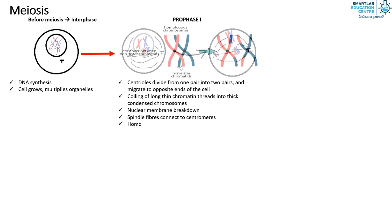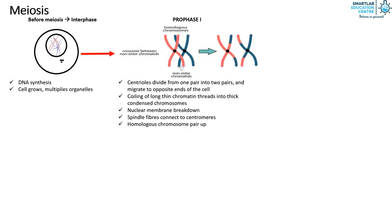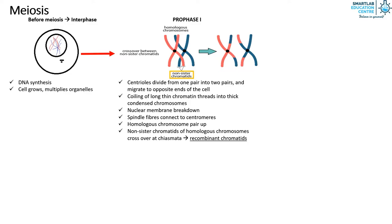In addition, let's zoom into the pairing of homologous chromosomes that takes place. As defined earlier, homologous chromosomes are chromosomes of the same size, have the same location of the centromere, and contain the same genes in the same position. Besides pairing up, a process called crossing over also takes place. The non-sister chromatids of homologous chromosomes cross over at the chiasmata, allowing the exchange of genes.